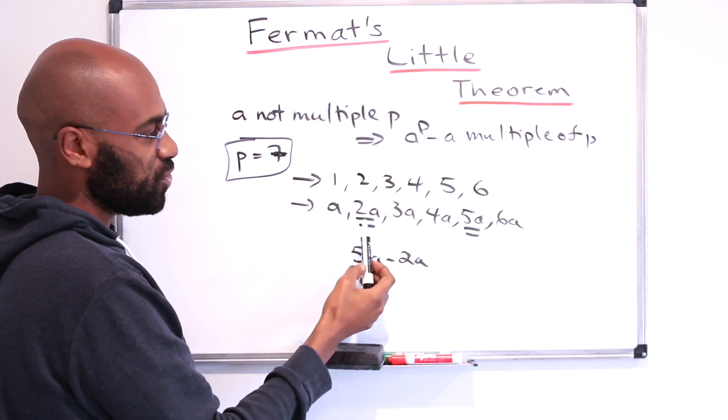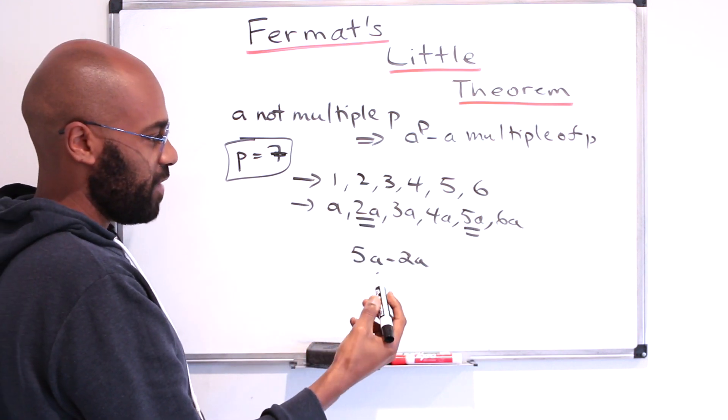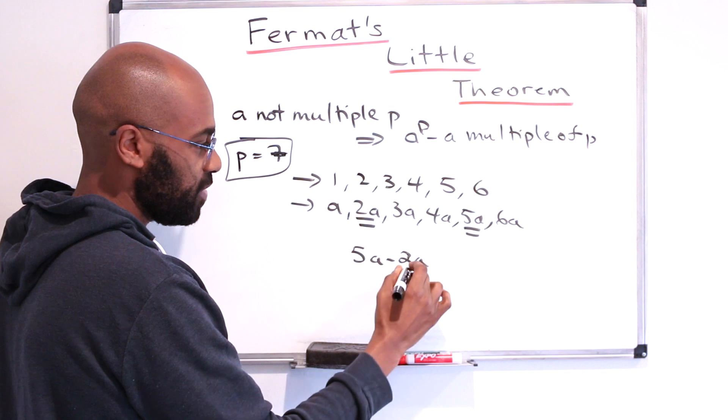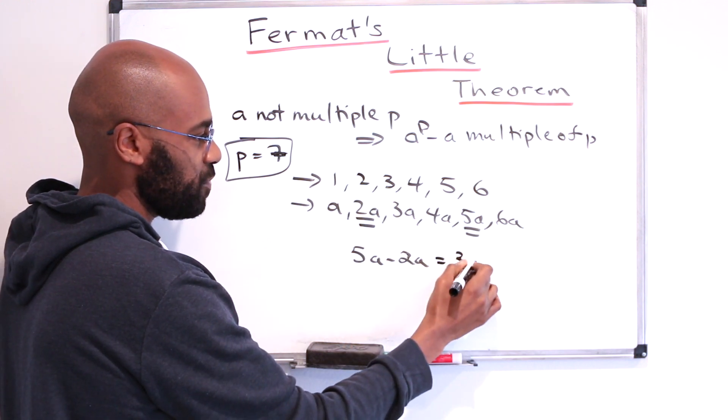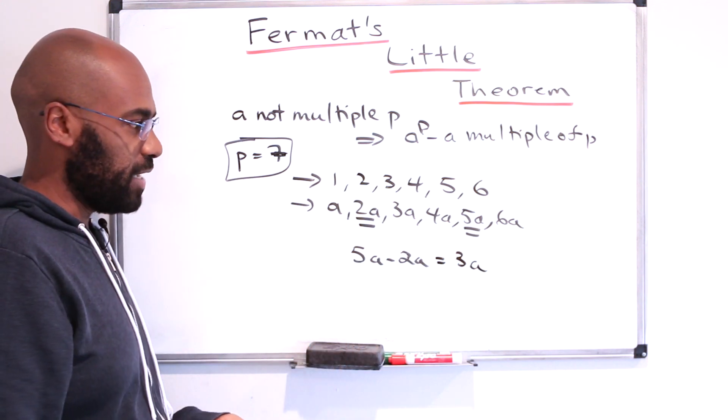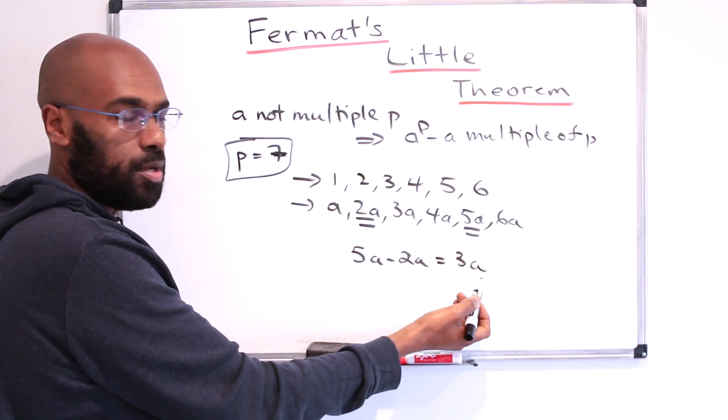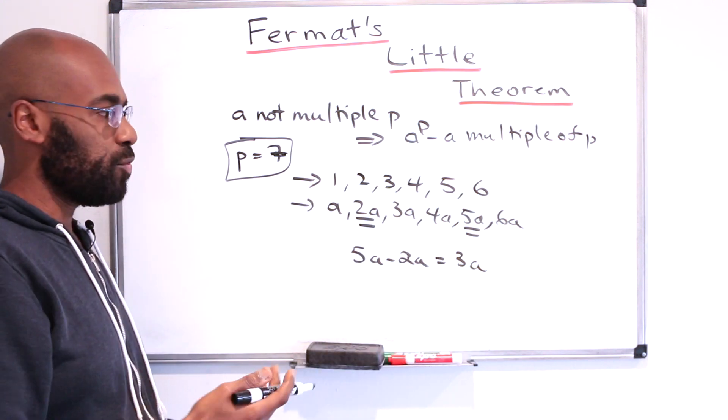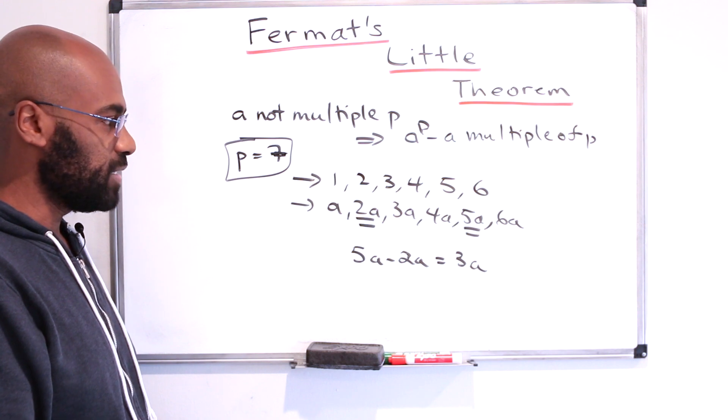So suppose, for example, these two left the same remainder when divided by 7. Then their difference would be a multiple of 7, which would mean 3a is a multiple of 7. But 3a isn't a multiple of 7, because a is not a multiple of 7, and 3 is not a common factor with 7 at all.